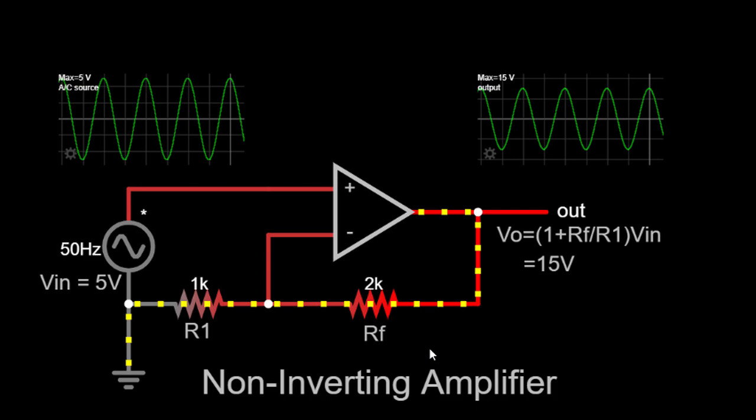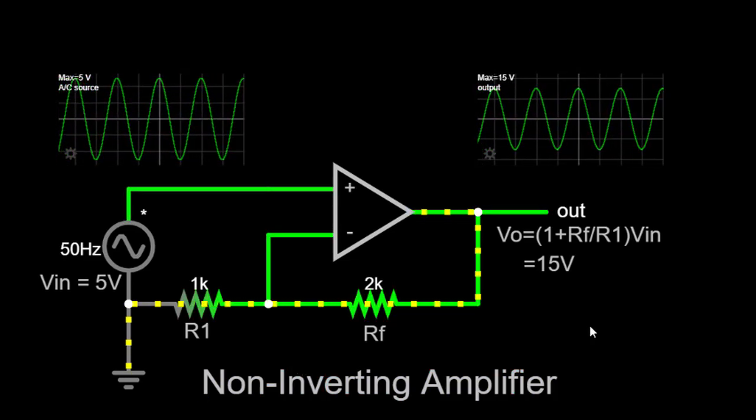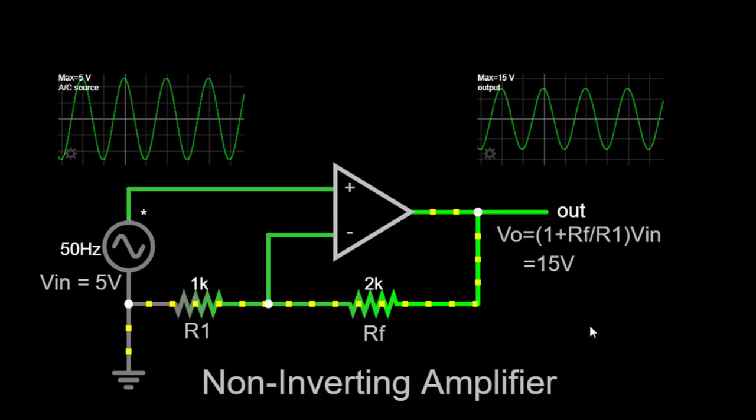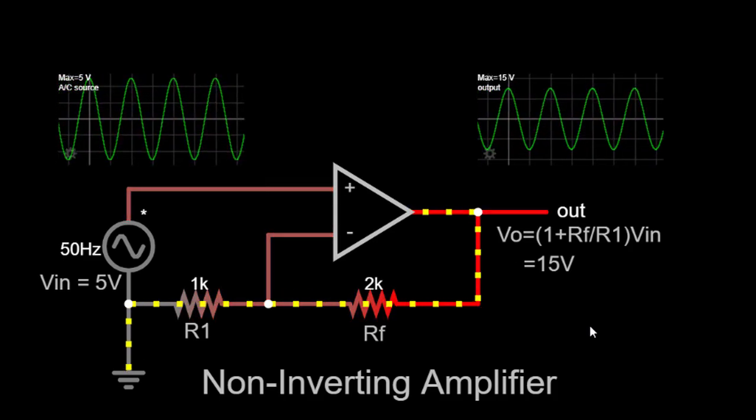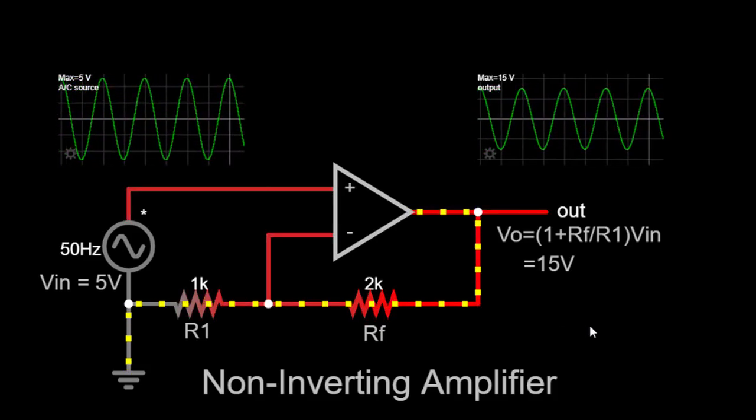A non-inverting amplifier is a fundamental circuit used in electronics to amplify signals without changing their polarity. It is widely used in various applications such as audio amplification, sensor interfacing, and signal conditioning.